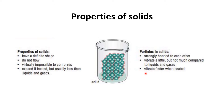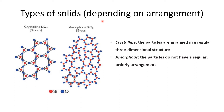Particles in solids also vibrate faster when heated. When we heat a solid, the particles gain energy and start vibrating faster. Depending on the arrangement of the particles, solids can be classified into two types: crystalline solid and amorphous solid.